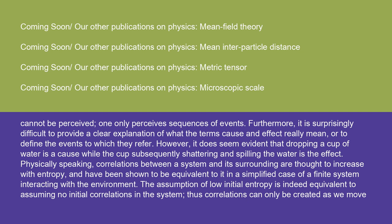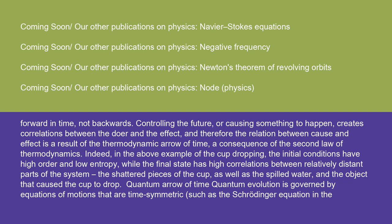However, it does seem evident that dropping a cup of water is a cause, while the cup subsequently shattering and spilling the water is the effect. Physically speaking, correlations between a system and its surroundings are thought to increase with entropy. The assumption of low initial entropy is equivalent to assuming no initial correlations in the system — thus correlations can only be created as we move forward in time, not backwards. Controlling the future or causing something to happen creates correlations between the doer and the effect, and therefore the relation between cause and effect is a result of the thermodynamic arrow of time.